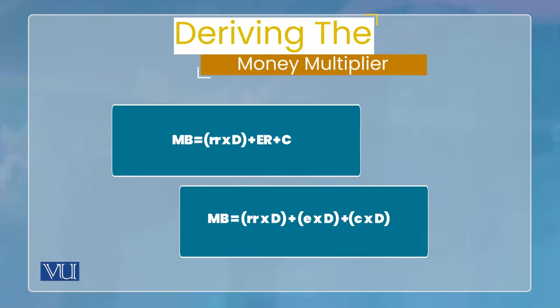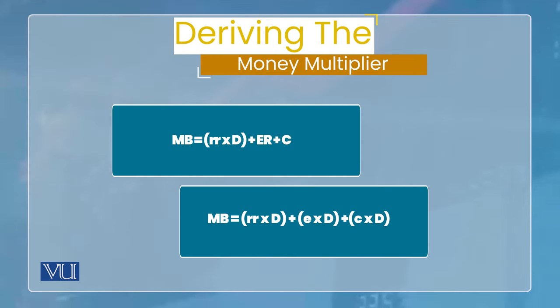چونکہ money multiplier میں monetary base سے multiply ہو کر total money آتی ہے، اس لیے ہم یہاں سے deposit کی value نکال لیتے ہیں تاکہ MB دوسری side پہ چلا جائے۔ تو deposit کی value آئی: D = [1 / (rr + e + c)] × MB۔ لیکن ہم نے صرف deposits تک نہیں پہنچنا تھا — ہم نے money تک پہنچنا تھا، اور money کی definition ہے: currency + deposits۔